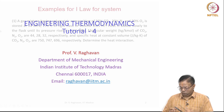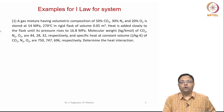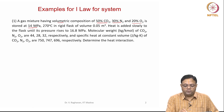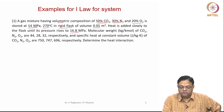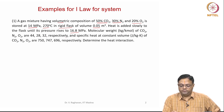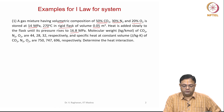Now we will see Tutorial 4 which is on ideal gas mixtures. The first problem: a gas mixture having volumetric composition of 50% CO2, 30% N2, and 20% O2 at 14 megapascals and 270 degrees centigrade in a rigid flask of volume 0.05 meter cube. Heat is added slowly to the flask until the pressure rises to 16.8 megapascals. Molecular weight of CO2, N2, O2 are 44, 28, and 32 kg per kilo mole respectively. Cp values in joule per kg Kelvin for these three components are given as 750, 746, and 696.